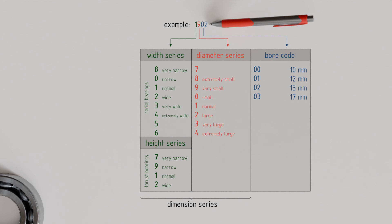The bore diameter is also indicated by a code and appended after the dimension series designation. Historically, bore diameters of 10, 12, 15, and 17 mm were very common,